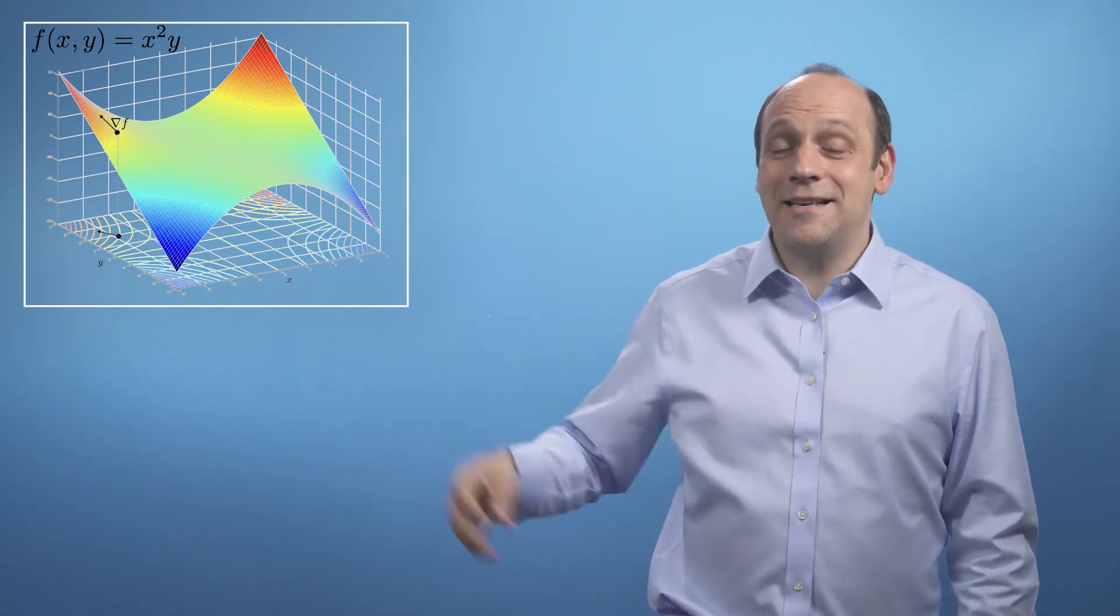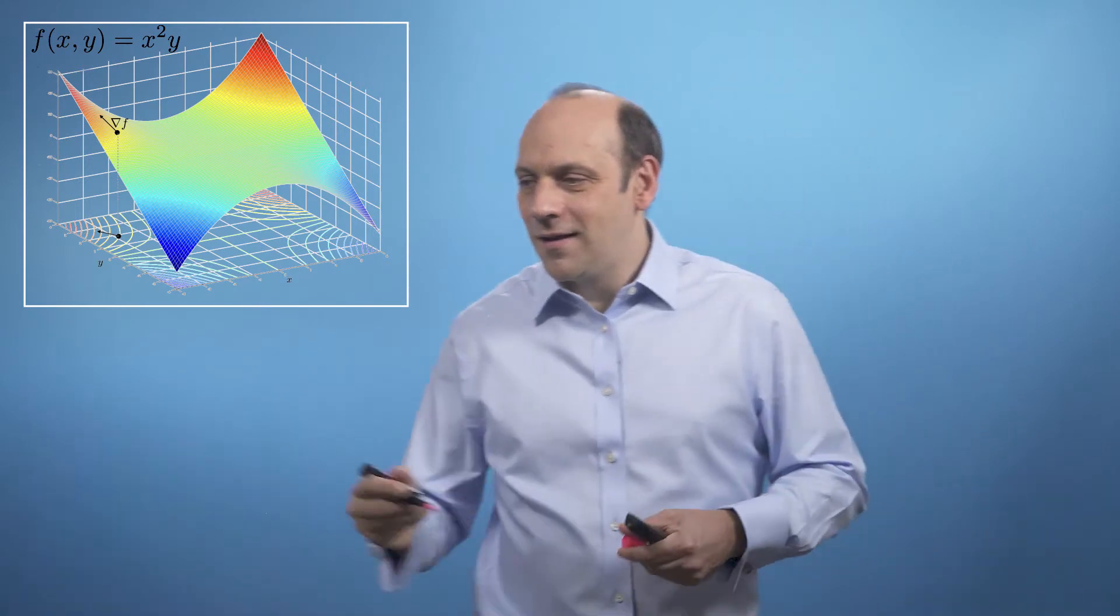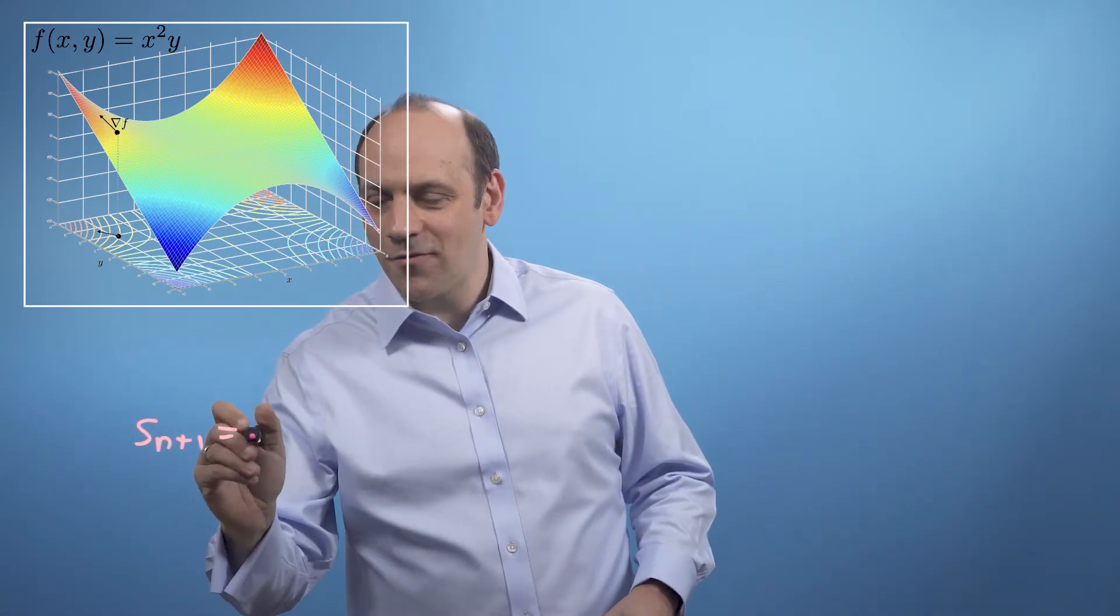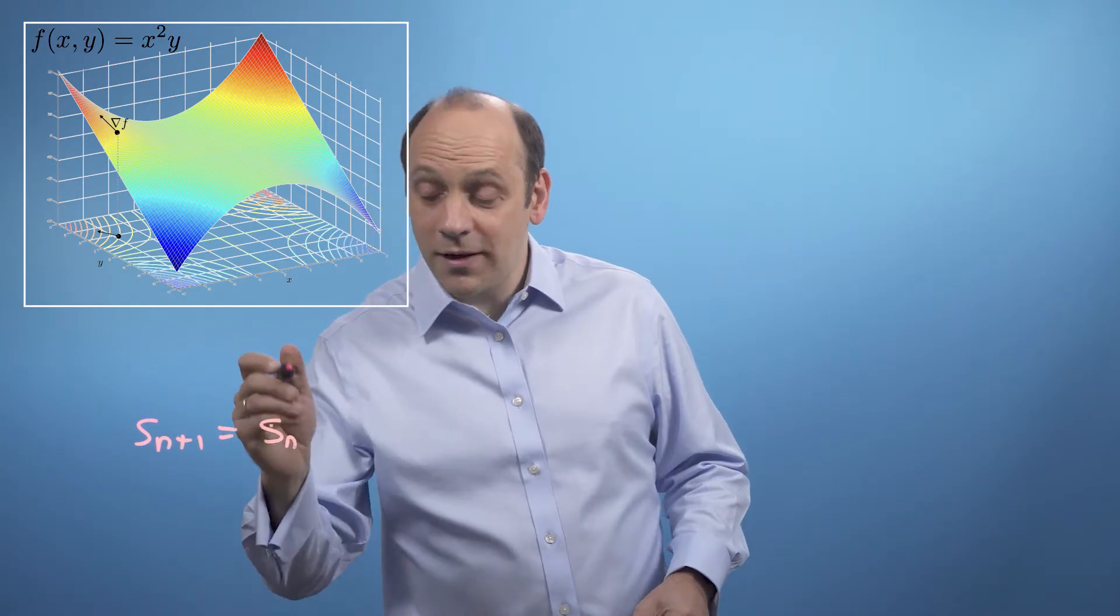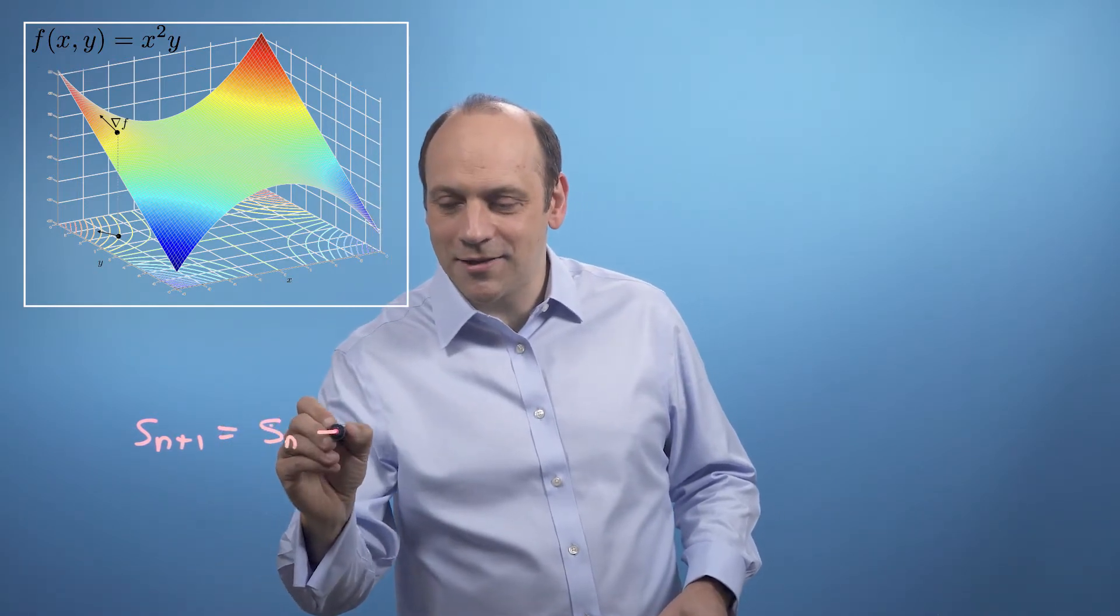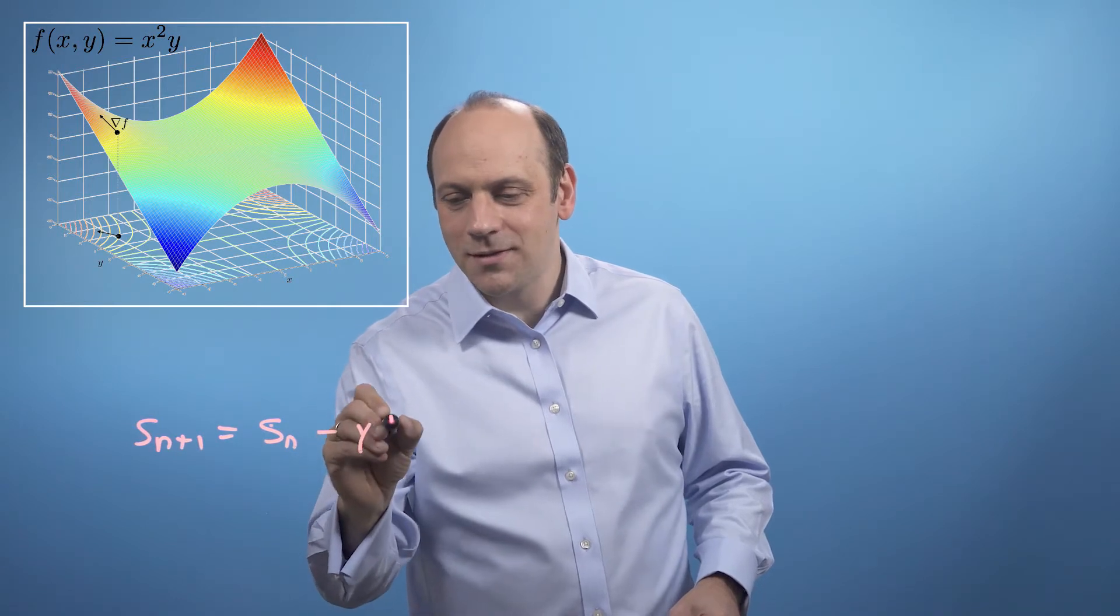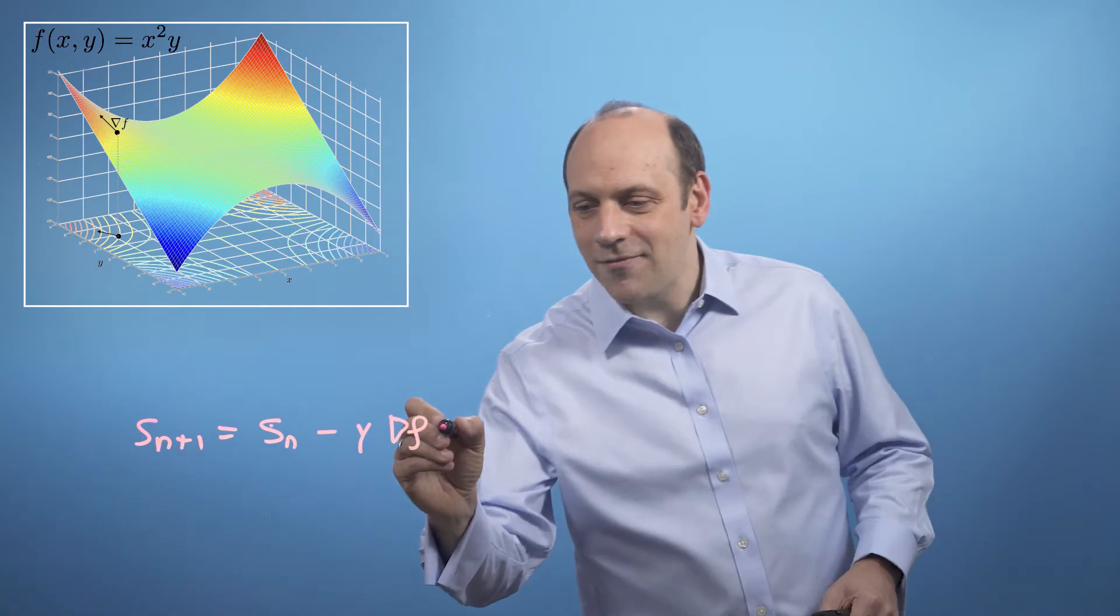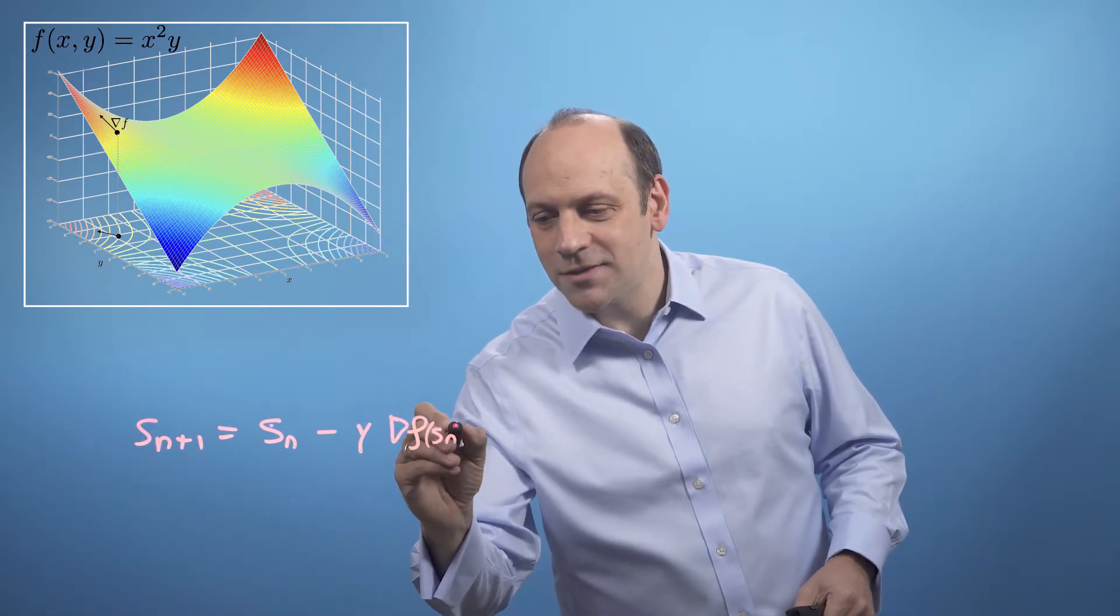So what we do in what's called the gradient descent method is we take a series of little steps down the hill. That is, if we started at some position Sn, then our next position, Sn plus 1, is given by Sn plus some little step down the hill. And that little step is given by minus some amount times grad, and grad evaluated at the previous position Sn.